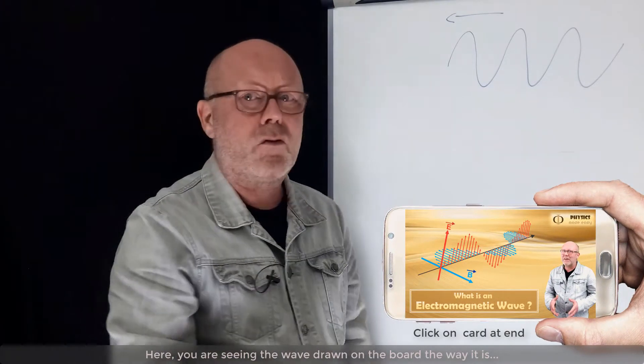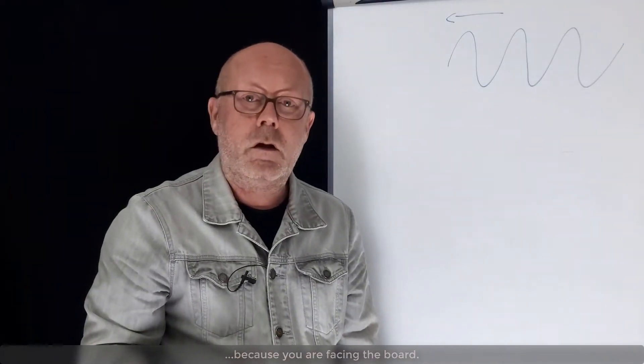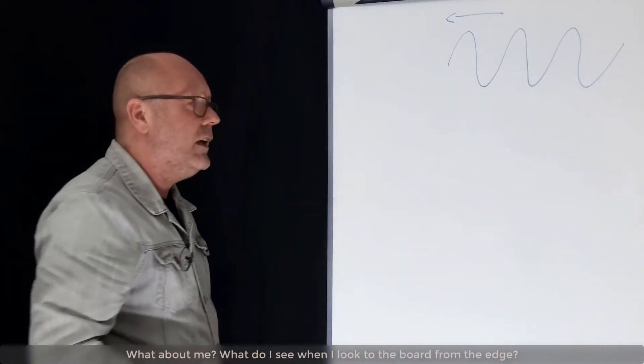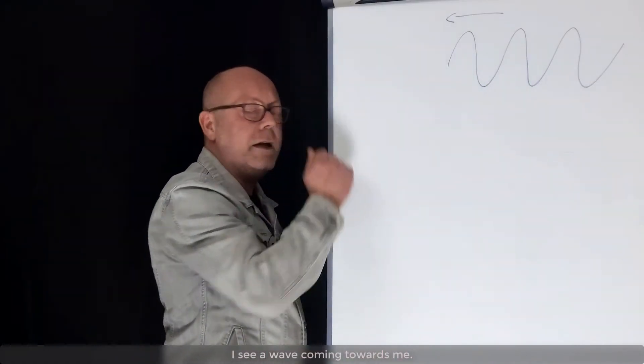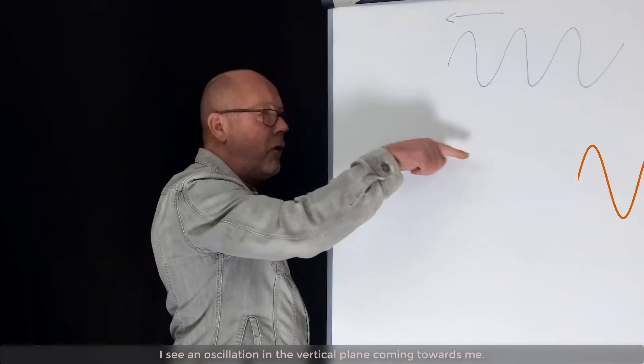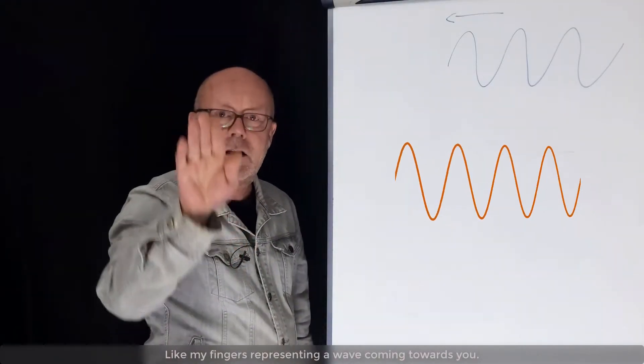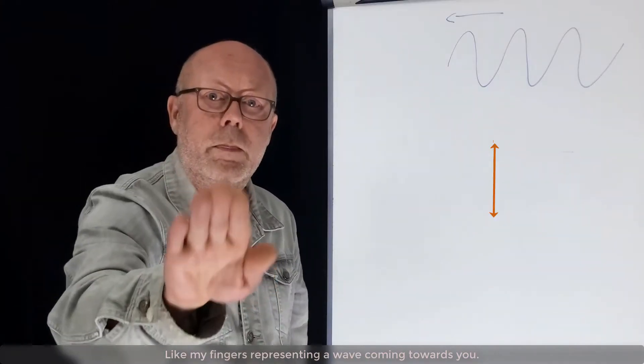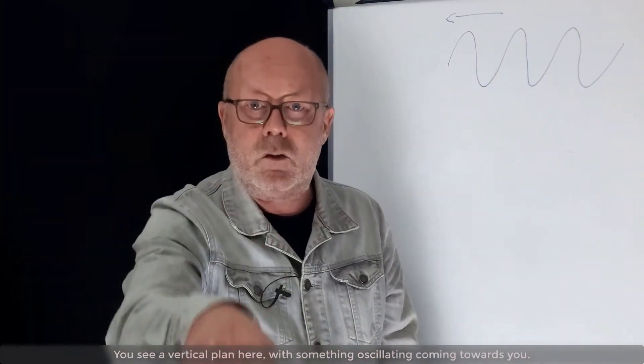Here, you are seeing the wave drawn on the board the way it is, because you are facing the board. What about me? What do I see when I look at the board from the edge? I see a wave coming towards me. I see an oscillation in the vertical plane coming towards me. Like my fingers representing a wave coming towards you. You see a vertical plane here, with something oscillating coming towards you.